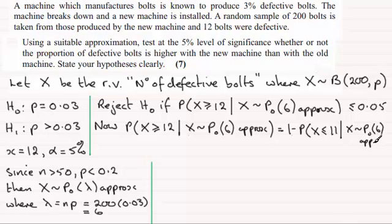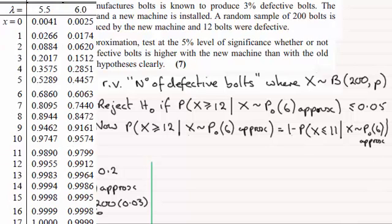So there we go. Now we need our tables for this. So let's just bring up the tables, and we're looking for a mean of 6 and looking for probability being less than or equal to 11. So you can see that it's 0.9799.